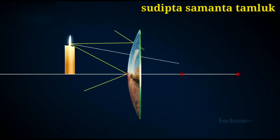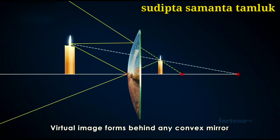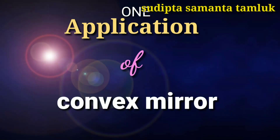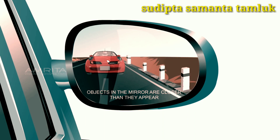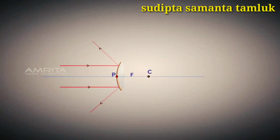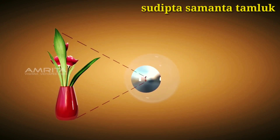Light rays from a distant object reflect off the convex mirror and diverge. Because the reflected rays never intersect, a virtual image forms behind the convex mirror. Images produced by this type of mirror are always virtual, upright, and reduced in size. One application of the convex mirror: you may have observed the rear-view mirror of a car. It shows the rear view of the car; however, there is a warning written on the mirror: 'Objects in the mirror are closer than they appear.'